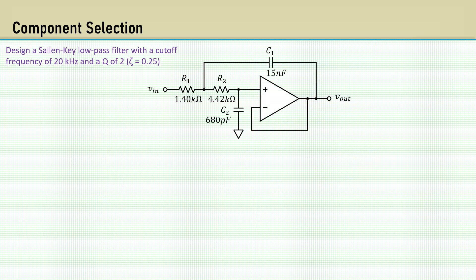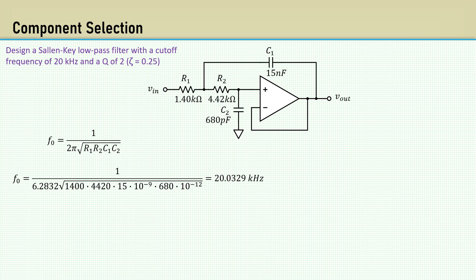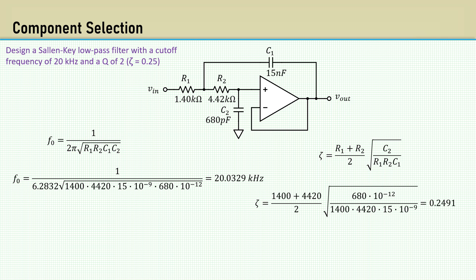It's always a good idea to put the selected values back into the analytical equations to make sure there were no mistakes. For cutoff frequency, we get 20.0329 kilohertz. That's very close. And for zeta, we get 0.2491.